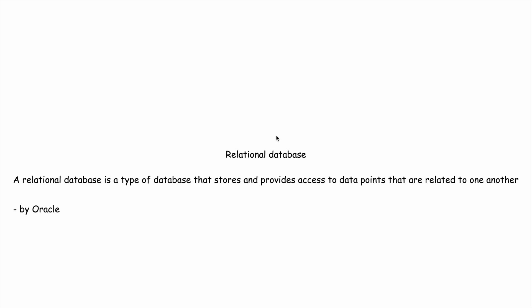This relational database is something we saw earlier — we saw how tables act as a unit of a database schema and how we can create relations between them using primary key and foreign key. A relational database is a type of database that stores and provides access to data points that are related to one another.